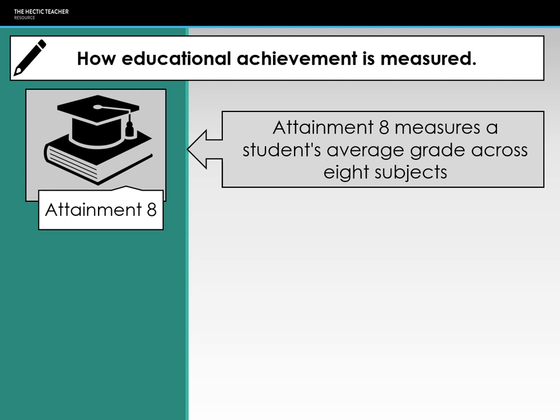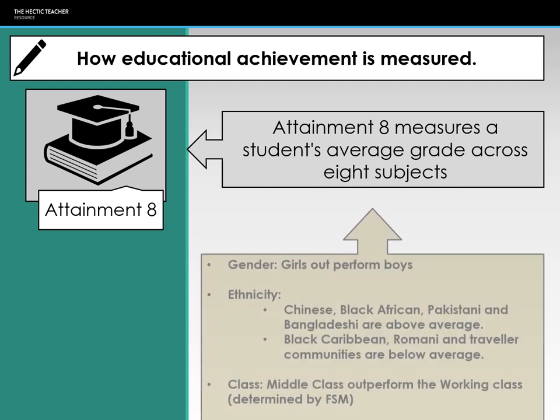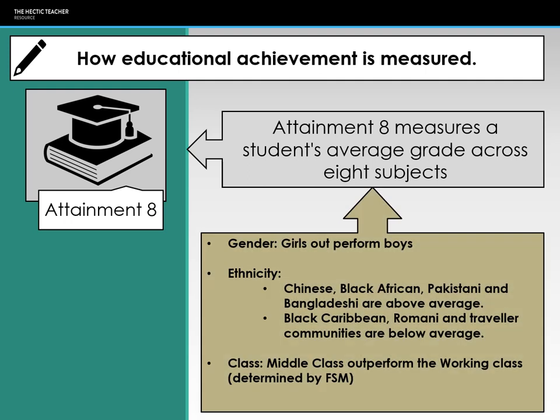Attainment 8 trends are not dissimilar from raw GCSE grades: girls still outperform boys. In terms of ethnicity, Chinese, Black African, Pakistani, and Bangladeshi students are above average, while Black Caribbean and Romani Traveller students are below average — though that gap is narrowing. Middle class students again outperform working class students.